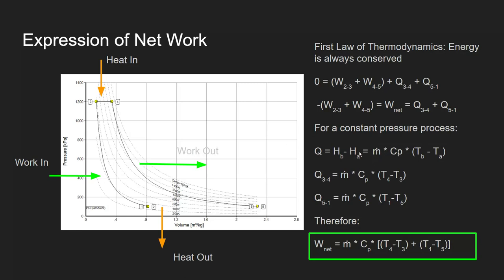For a constant-pressure process, heat can be simplified as the mass flow of the fluid times Cp — the specific heat capacity, which measures how much energy is needed to raise the temperature by one degree Celsius — multiplied by the temperature difference between the two states. For heat addition from three to four: Q̇ = ṁ · Cp · (T₄ − T₃). For heat rejection from five to one: Q̇ = ṁ · Cp · (T₁ − T₅), which is negative since T₁ < T₅.